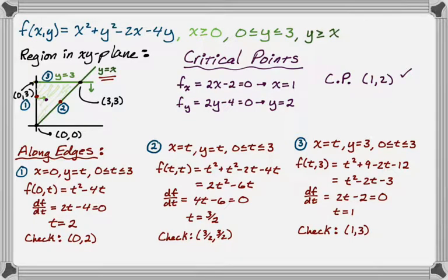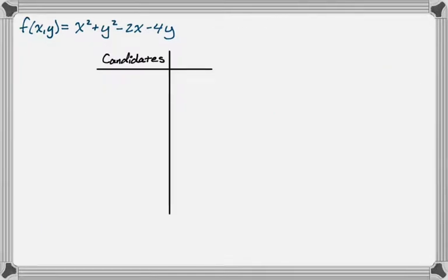Alright. So what I'm going to do is I'm going to copy the function. I'm going to make a table. And I'm going to put all of these points in the table and see what has the biggest and smallest function value. So here we go. Alright. So our function, we have our candidates, and then we're going to evaluate the function at our candidates. So the first three candidates we found were (0,0), (3,3), and (0,3). And those came from looking at the corners of the region. So those were possible candidates.